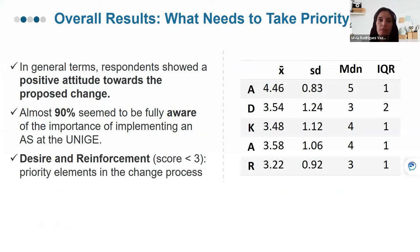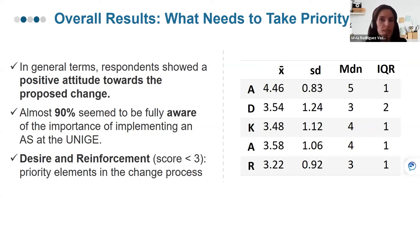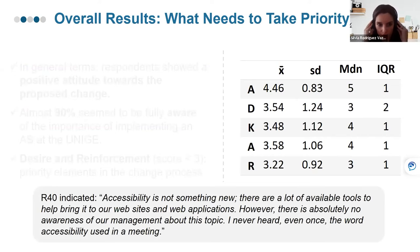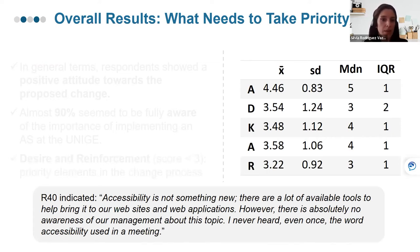The data revealed that in general, we all have a positive attitude towards the proposed change. Almost 90% of respondents seem to be fully aware of the importance of having an accessibility strategy. But the questionnaire helped us identify elements requiring more urgent intervention. The median was higher than three in all but two ADKAR elements, which were desire and reinforcement. One respondent noted that accessibility was not something new, but he had never heard the word 'accessibility' in a meeting — claiming there was not management support for this topic.